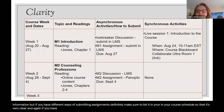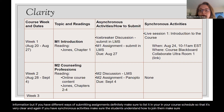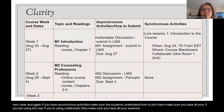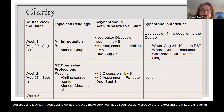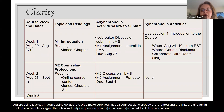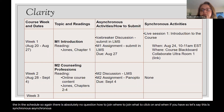If you have synchronous activities, make sure students understand how to join them. If you're using Collaborate Ultra, for example, make sure you have all your sessions pre-created and the links are already in the schedule — so there is absolutely no question how to join, where to join, what to click on, and when. For a combined synchronous and asynchronous course, make it very clear what is being done where.